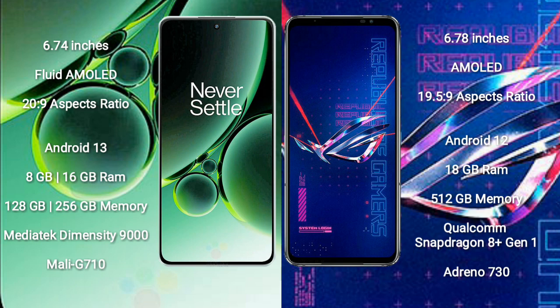OnePlus Nord 3 features a MediaTek Dimensity 9000 processor and Mali-G710 GPU. Asus ROG Phone 6 Pro comes with 18GB RAM and 512GB internal storage, a Qualcomm Snapdragon 8 Gen 1 processor, and an Adreno 730 GPU.